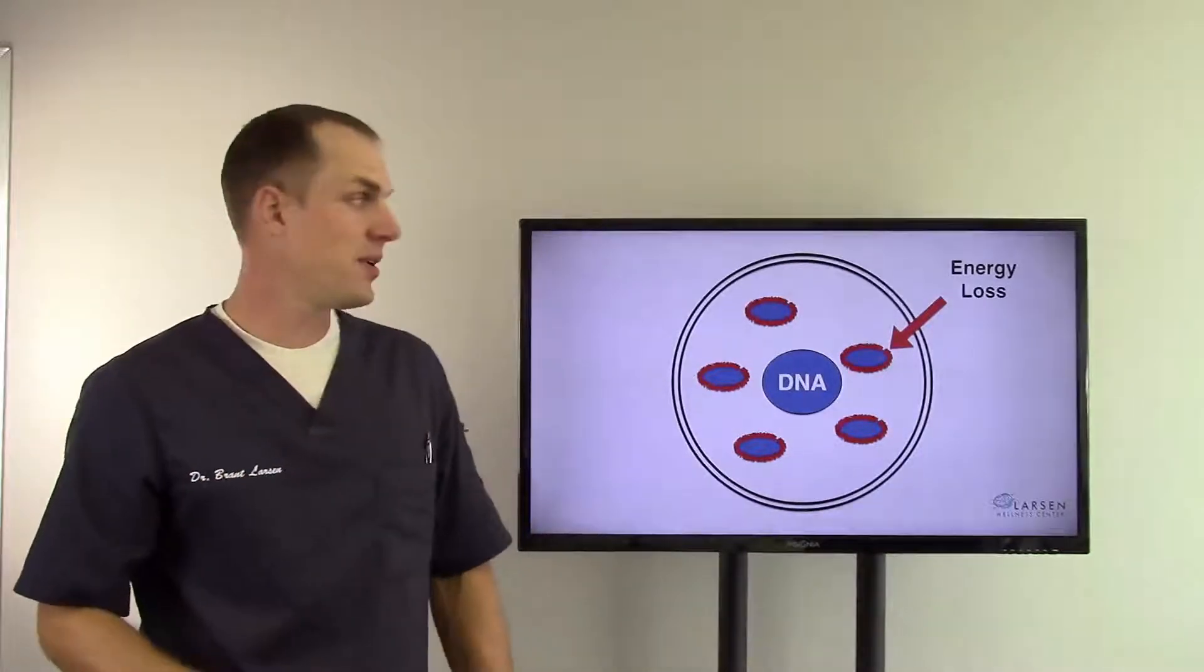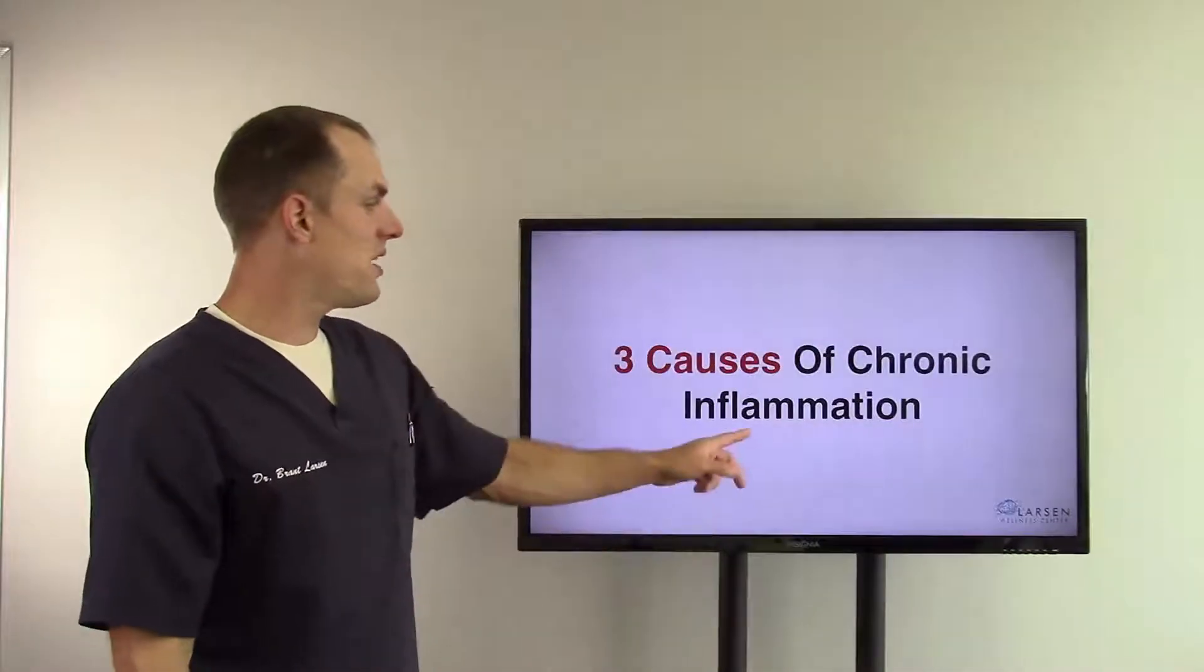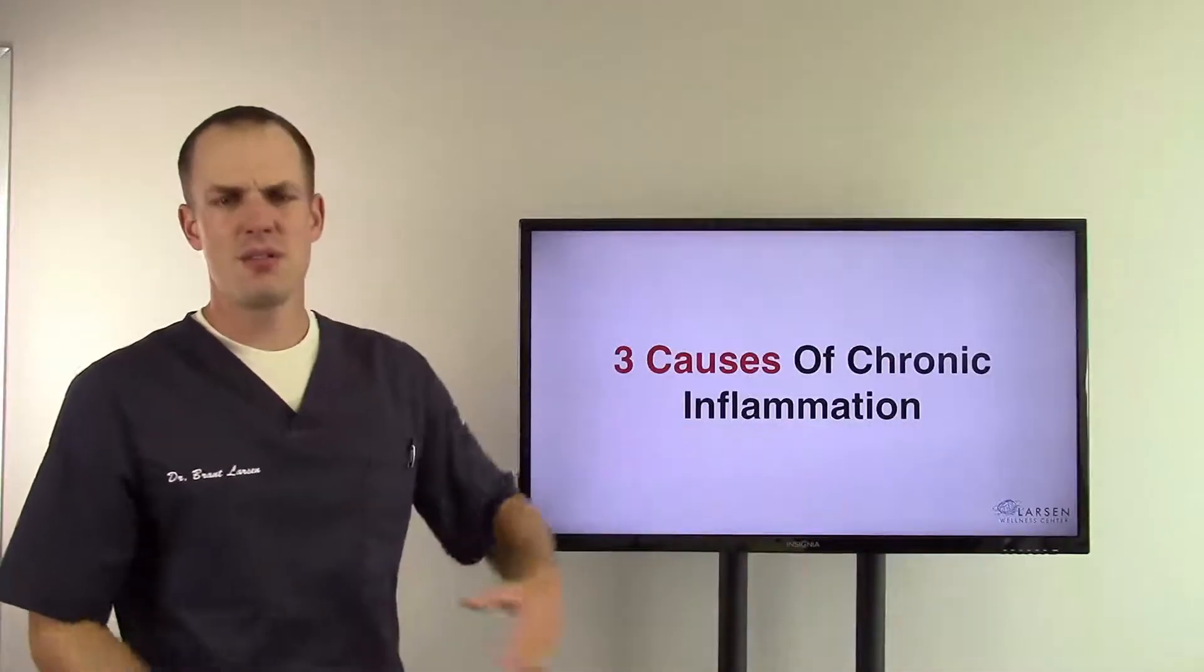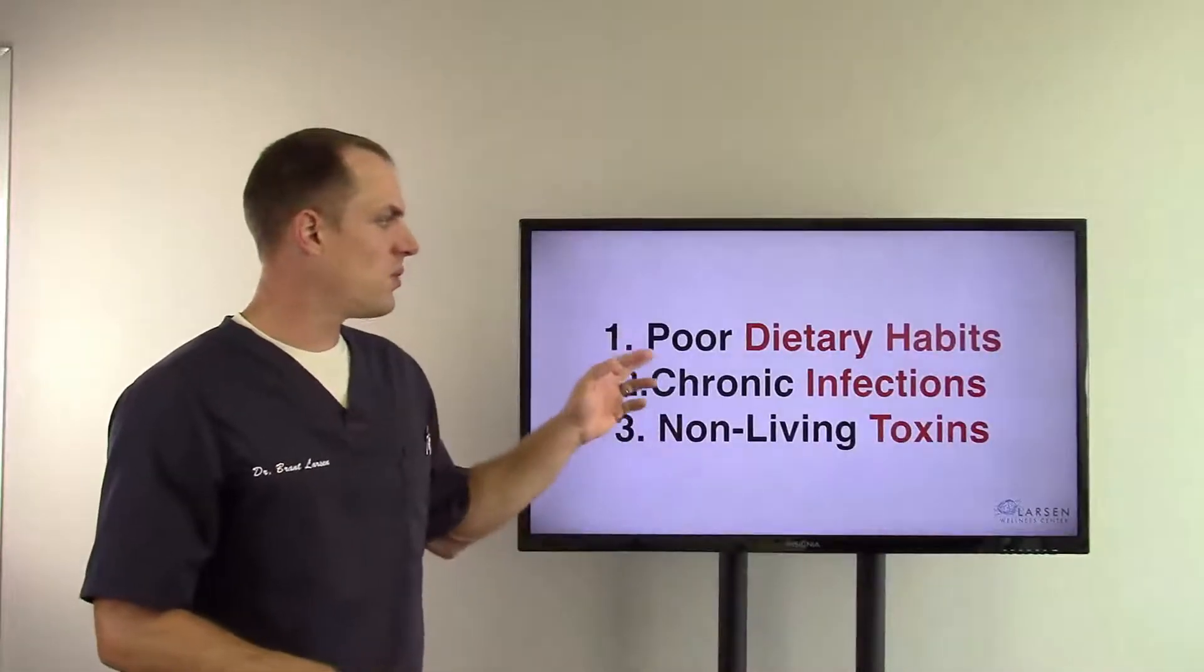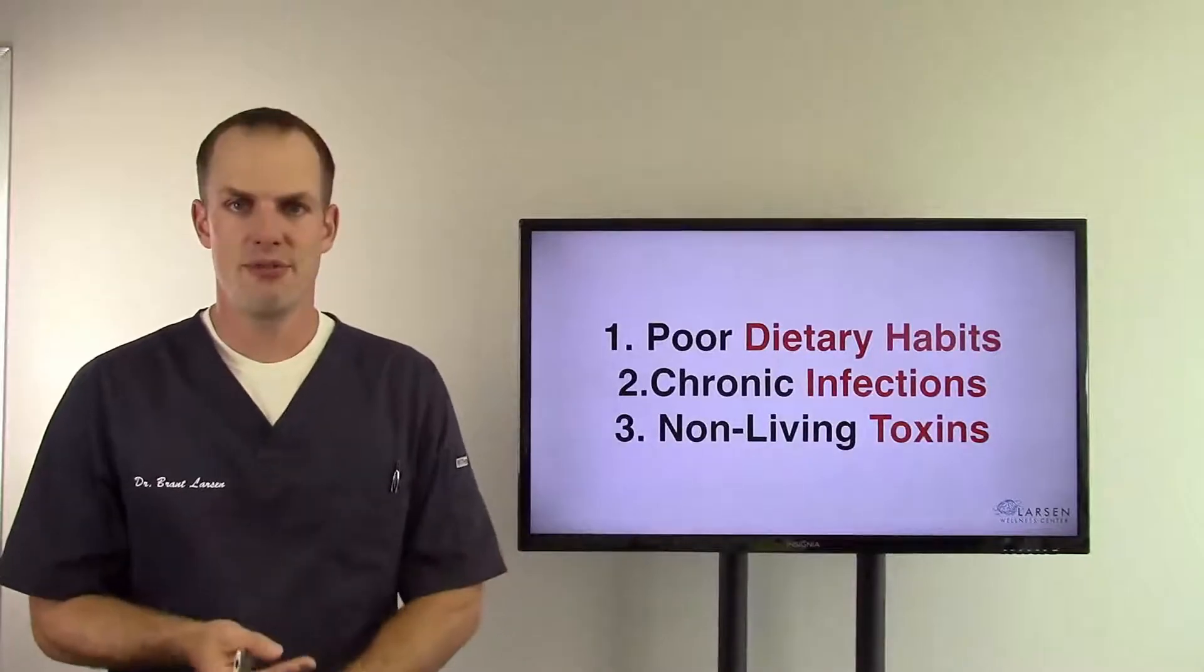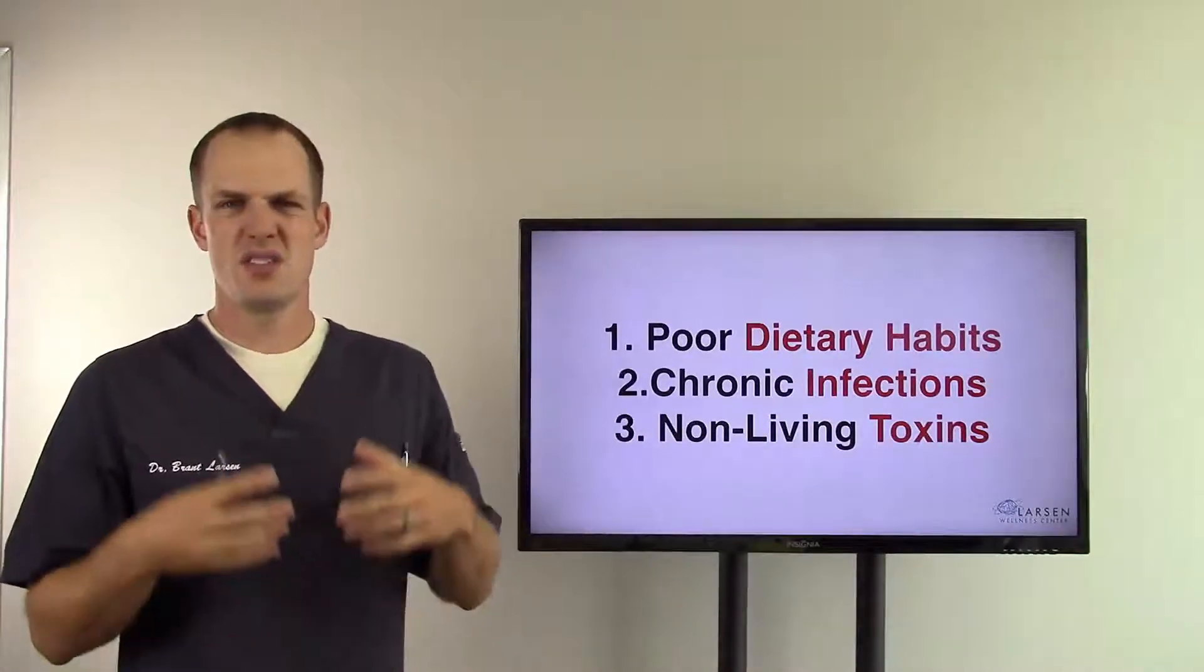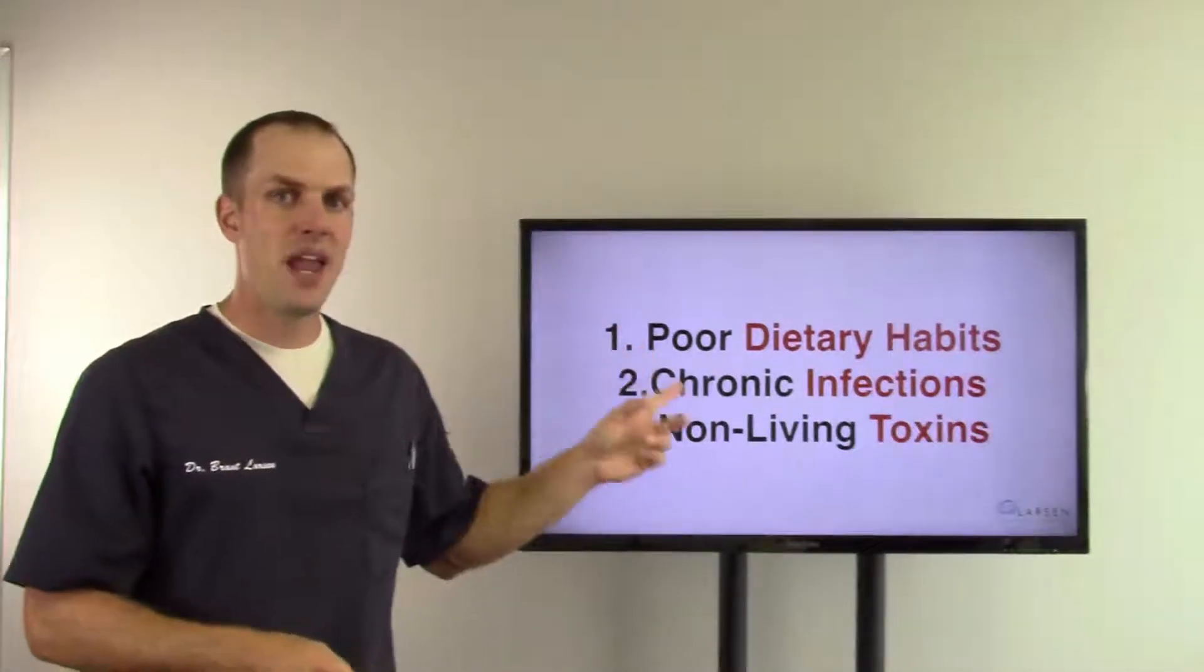Now there's three causes of chronic inflammation - three main ones that we talk about. Number one: poor dietary habits. So people are eating the wrong kind of fats - we have trans fats, we have these bad fats. And remember, your cell membrane is made up of fat, it's very important to get the right fats in.